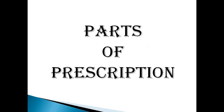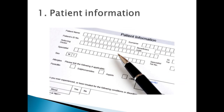Moving forward to the parts of a prescription. The very first part is the patient information. The full name and address of patient is necessary on prescription. It is generally done for identification purposes. Writing the full name will help the pharmacist to identify the correct patient and this will avoid any chance of dispensing medicine to the wrong person. As you can see here, the format of patient information.